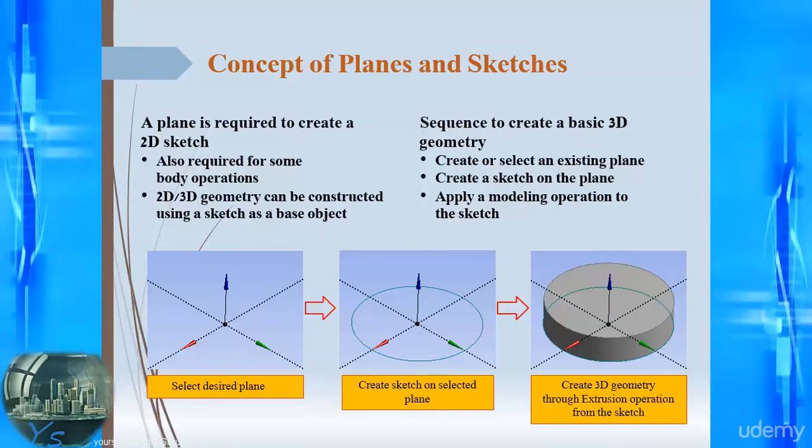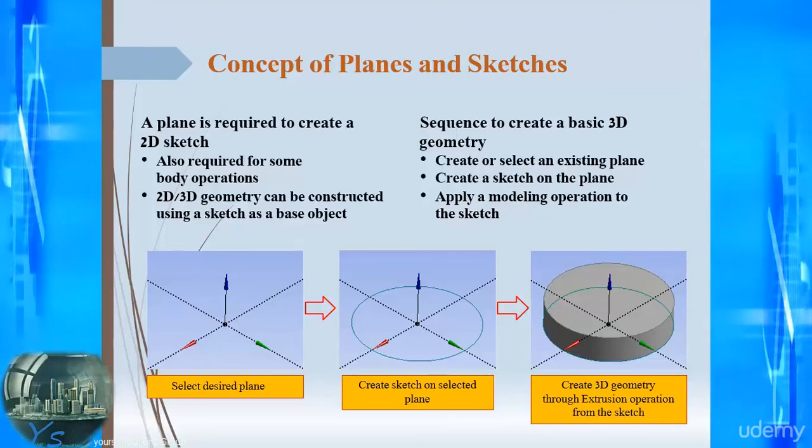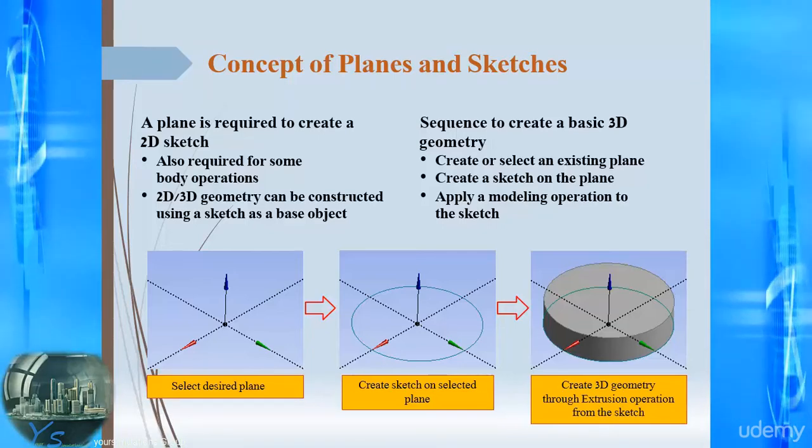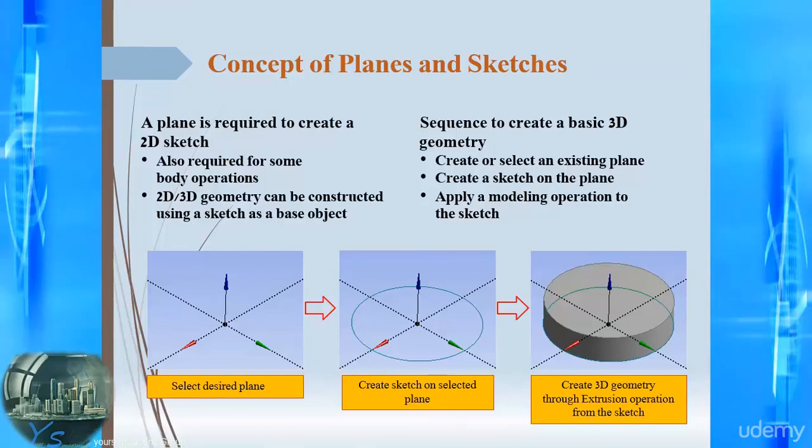With that circle we can then perform a 3D operation, in this case to extrude it into a cylinder shape, where we can see the reliance of the geometry of the body to the sketch and then the sketch to the plane.